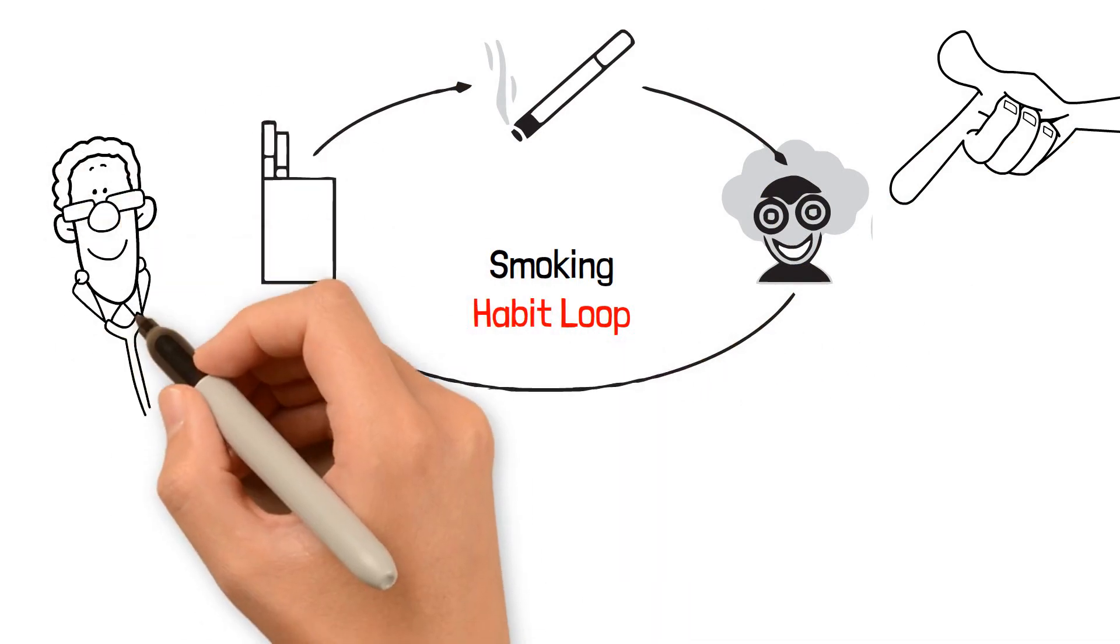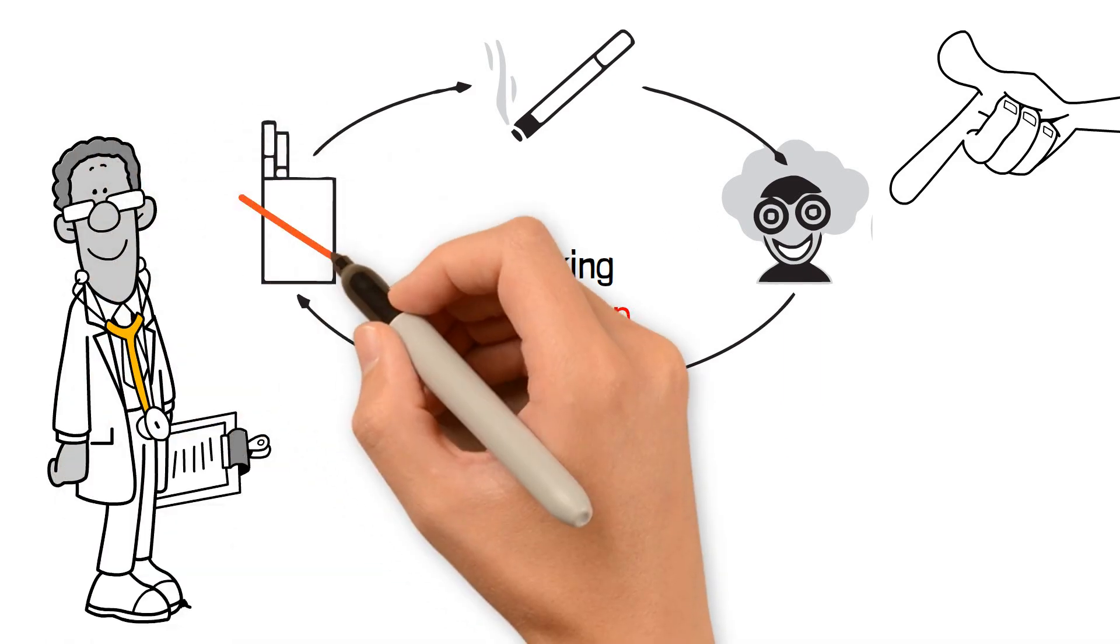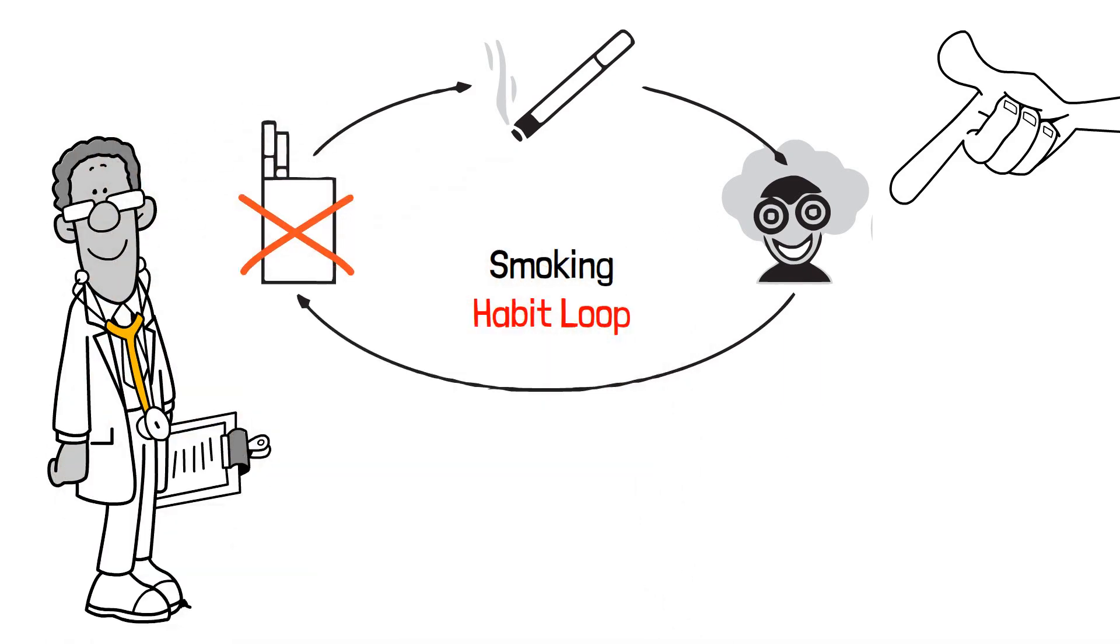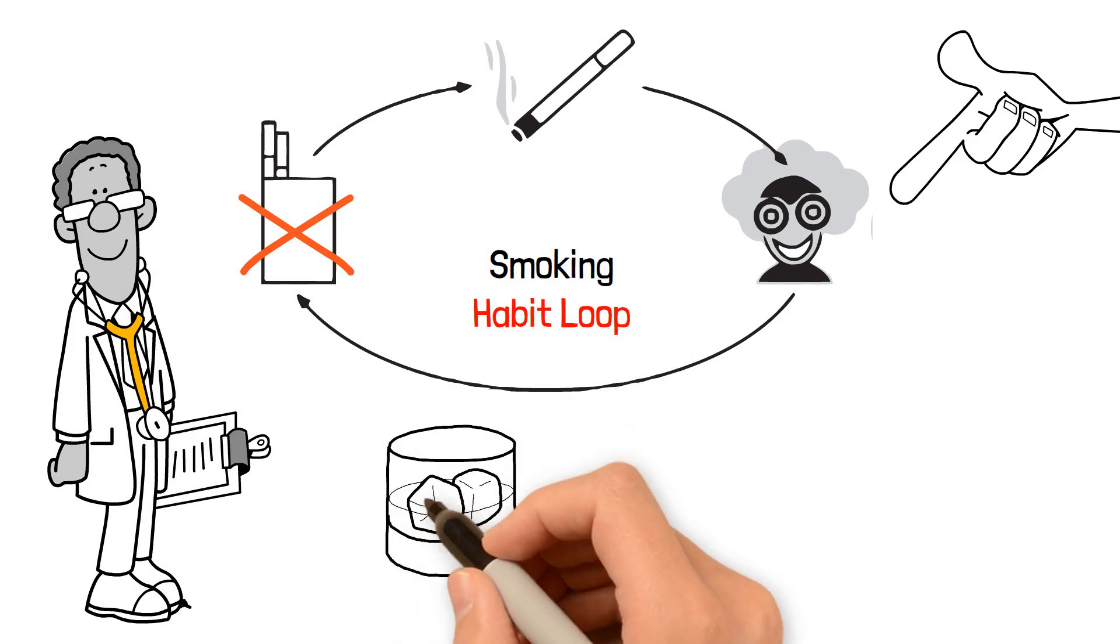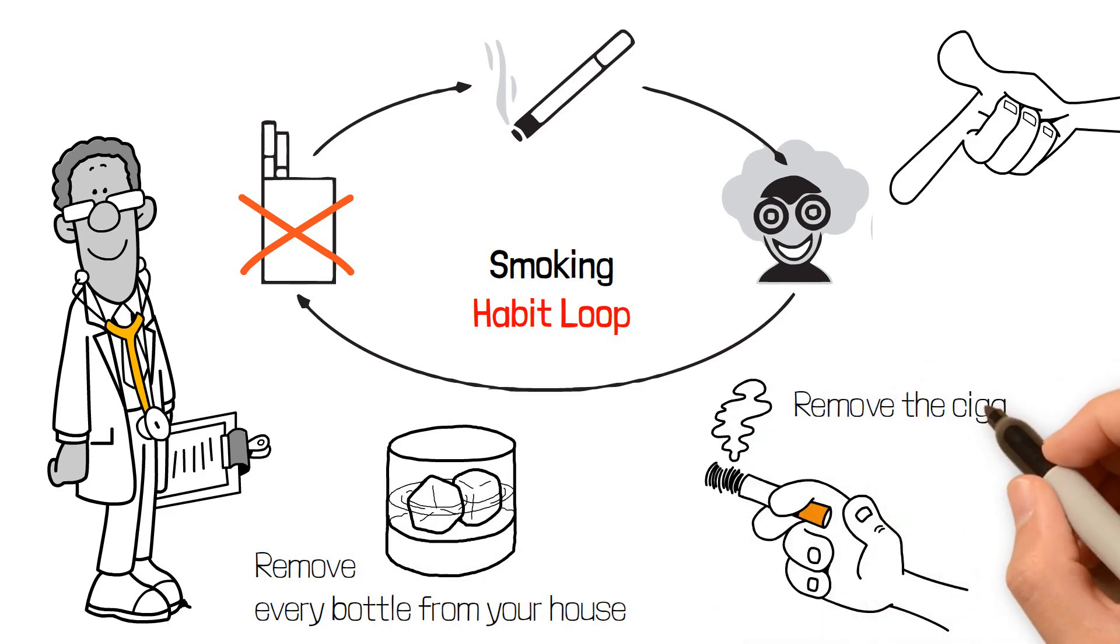That's why a lot of professionals recommend removing the cues when you're trying to give up a dangerous habit such as smoking or drinking. If you're trying to quit drinking, remove every bottle from your house. If you're quitting smoking, remove the cigarettes, lighters, ashtrays, and so on.